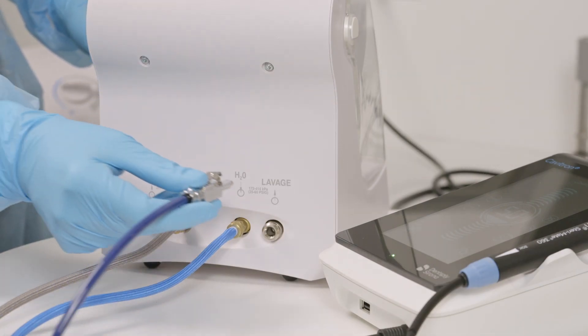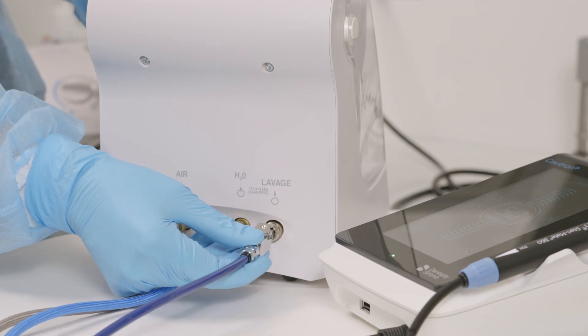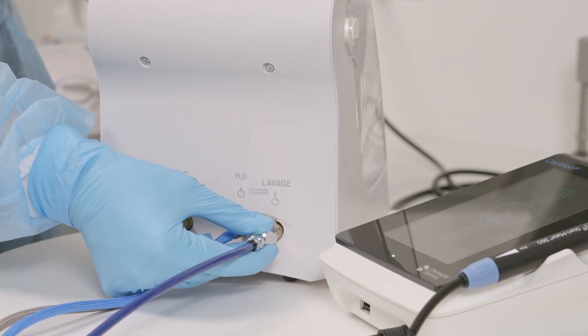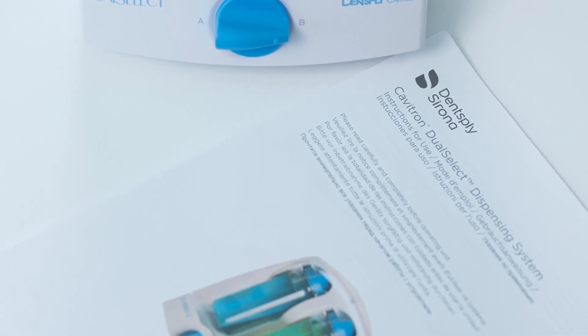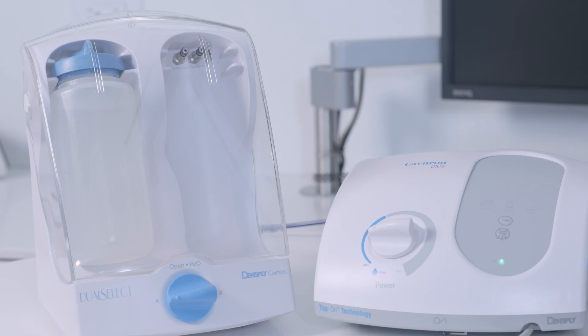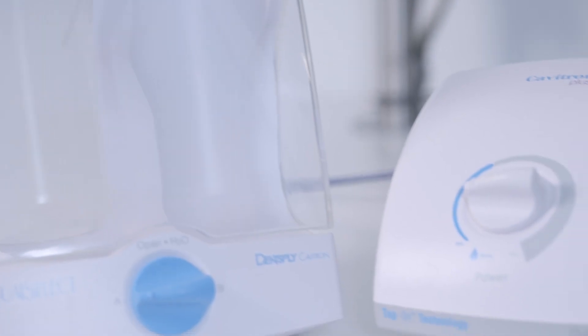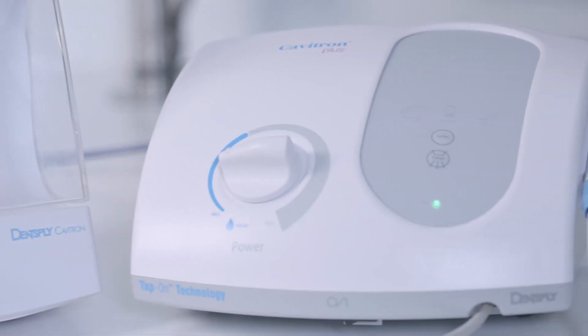Begin by connecting the Cavitron Scaling System to a Dual Select Dispensing System. Make sure to follow the weekly steps in the Dual Select System's Instructions for Use, or IFU. Once you've read the Dual Select Dispensing System's IFU and have properly connected it to your scaling unit, follow these steps.